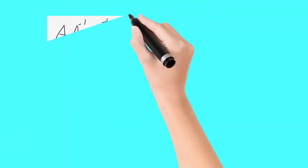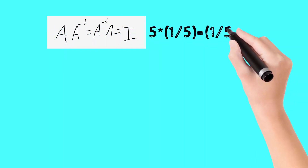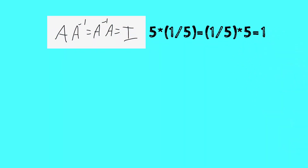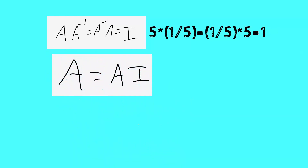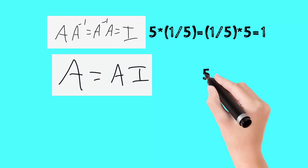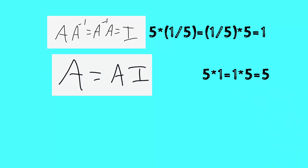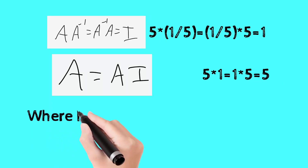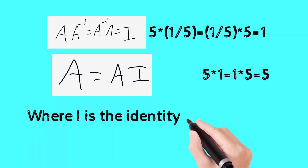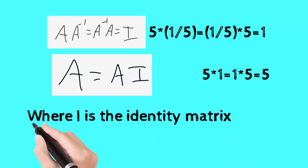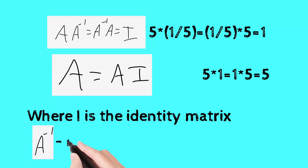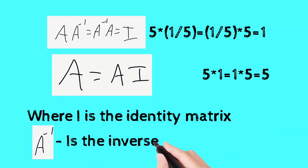The first property is A inverse times A equal to A times A inverse equal to I. For example, φ times (1/φ) and (1/φ) times φ is equal to 1, where 1/φ is the inverse of φ. Also, A equals A times I — for example, φ times 1 equals φ, where 1 is the multiplicative identity. Similarly, I is called the identity matrix, which serves the purpose of 1 in matrix operations.